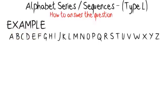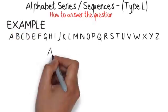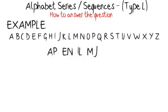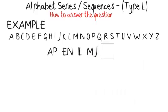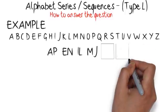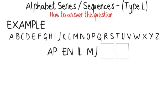Example: A-P, E-N, I-L, M-J. Write down the sequence so that you have enough space to draw and label the pattern as you need to. A-P, E-N, I-L, M-J.